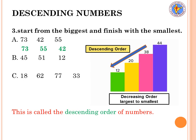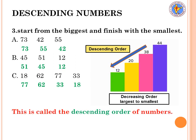For the next set — 45, 51, and 12 — the biggest is 51, then 45, then 12. For set c — 18, 62, 77, and 33 — the biggest is 77, then 62, then 33, then 18. Bigger to smaller — this is called descending order of numbers, meaning you write from the largest number to the smallest number in order.